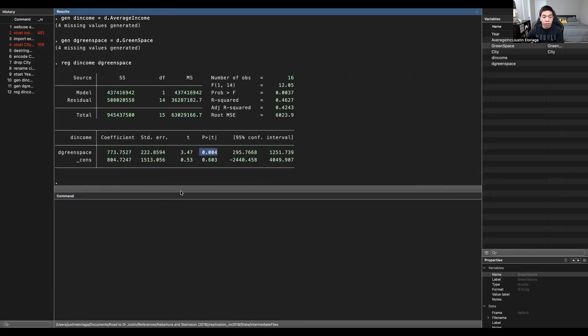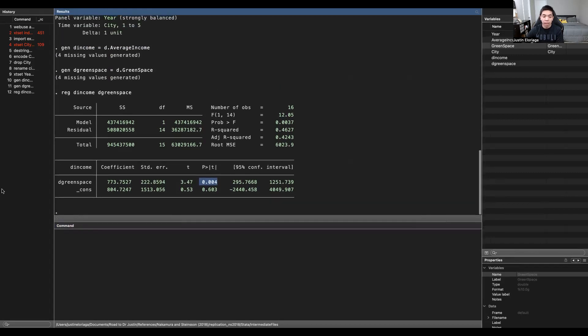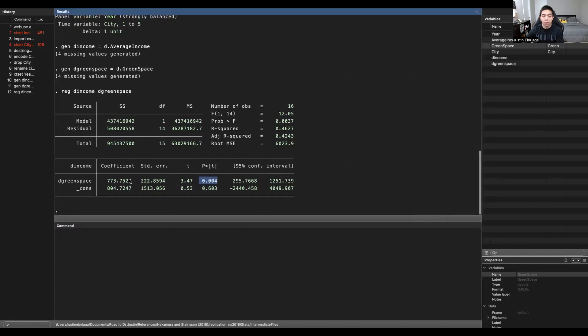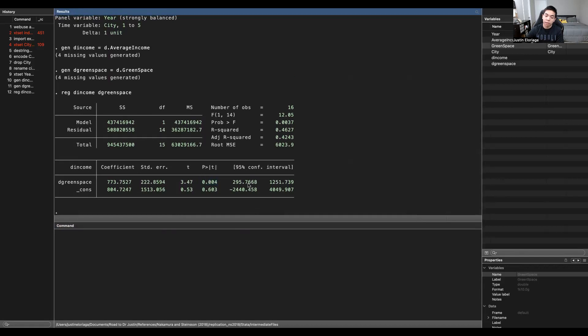Now, is the first differences model perfect? No. If the variable doesn't really vary throughout time, it's not really that useful because we cannot generate enough variation. And there are more sophisticated techniques that have been developed after the first differences model, which we will discuss in our next video. Thank you for your attention, and I'll see you in the next video.